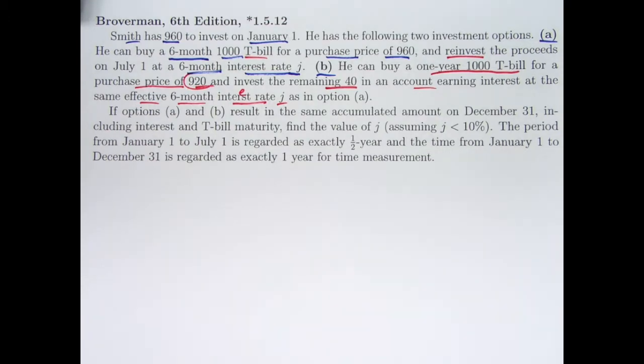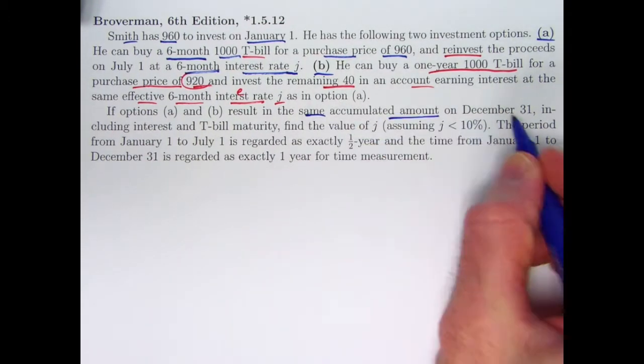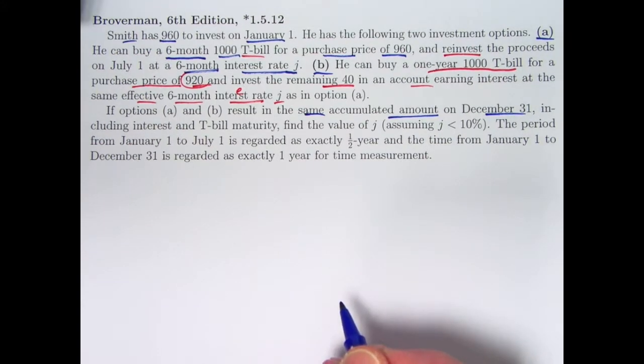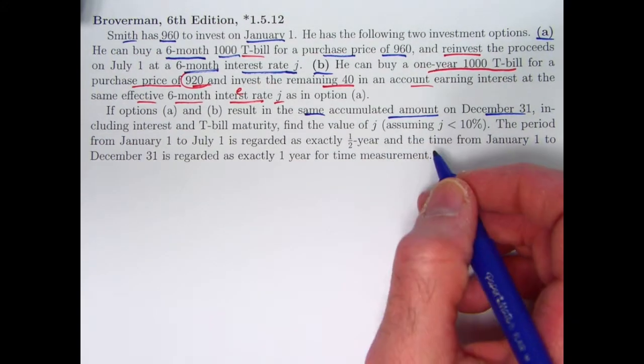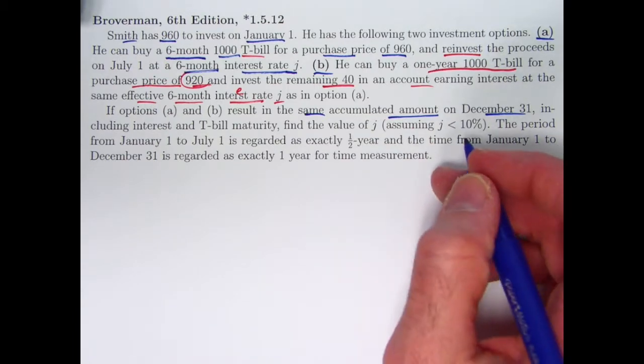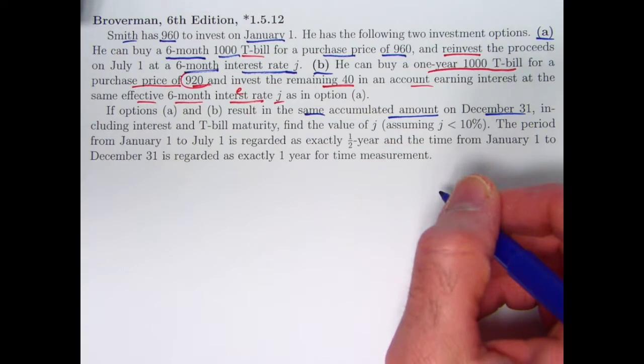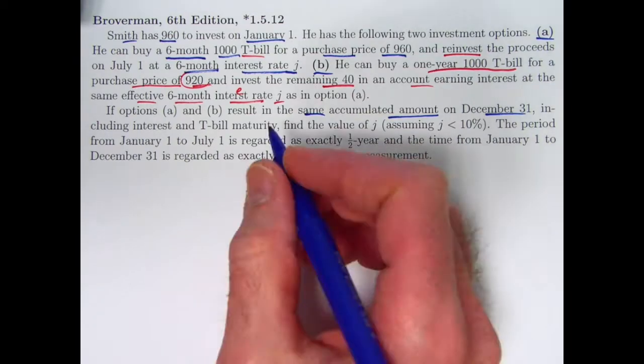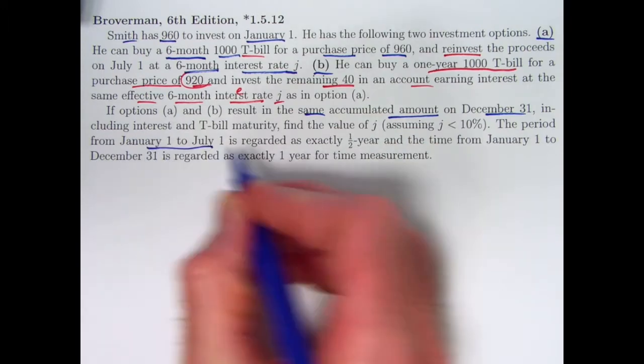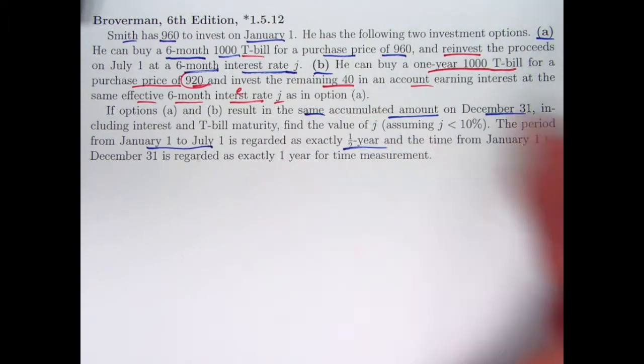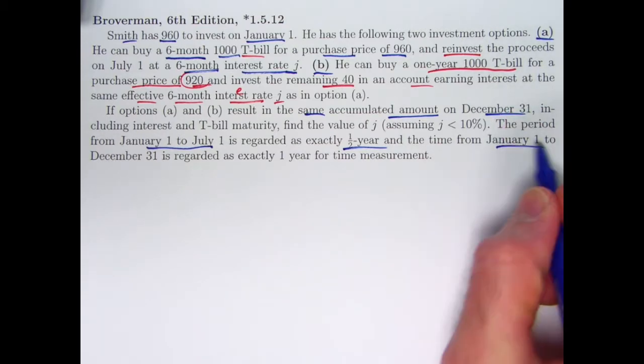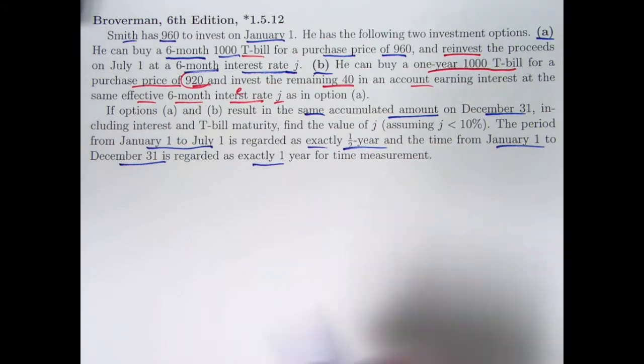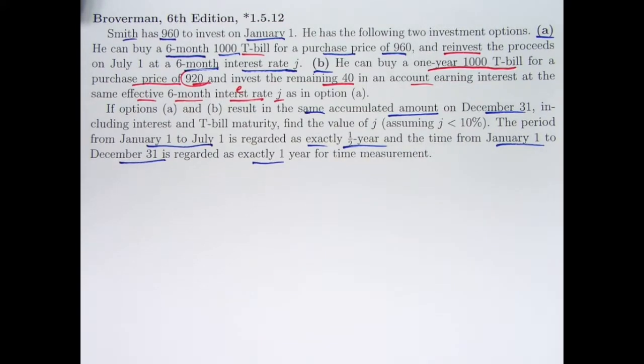The options are going to give you the same accumulated amount on December 31st, the end of the year. We want to solve for J. Evidently there might be two values of J that could be possibilities here, maybe there's going to be a quadratic equation that we have to solve. We want the one that's going to be less than ten percent, the more realistic one. To simplify things, January 1st to July 1st is exactly a half year, and January 1st to December 31st is exactly one year. Often T-bills, their time frames are in weeks, but we're going to keep things simple by assuming these kinds of things.